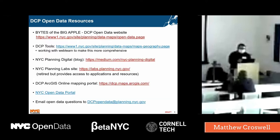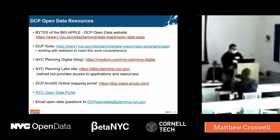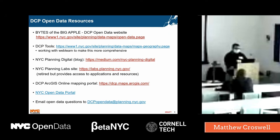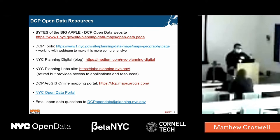Now I want to get into some of the different resources we make available. The first one is just the Bytes of the Big Apple website, which is on City Planning's website. If you go to the data and tools tab, you have two sections: one for open data and one for maps and geography. Within the open data section, all the data sets are available. On the left are all the different categories of data. For some of the bigger data sets like PLUTO, we maintain a data dictionary and a readme file — very useful if you're trying to figure out what a domain value means or what a specific field means.